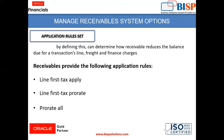In Line First Tax Apply, you apply the Open Line Item Amount first and the remaining amount in order of Tax, then Freight, and then Finance Charges. The next one is Line First Tax Pro Rate. In this, you apply a Proportionate Amount to the Open Line Item Amount and the Open Tax Amount for each line, and then the remaining amount is applied to Freight and Finance Charges.